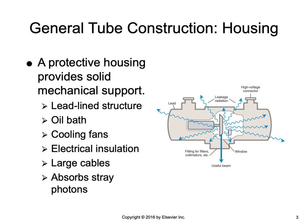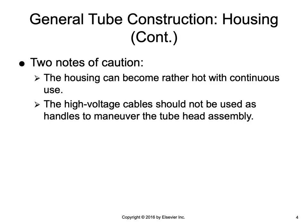The protective housing with the x-ray tube situated inside serves as an electrical insulator and a thermal cushion for the x-ray tube, in addition to being a protective device against physical damage. There are two notes of caution about the x-ray tube housing. Because it is on for a very extended amount of time, the housing can become very hot. This is most likely to occur with fluoroscopic units, and most permanently installed units have the tube located under the tabletop to limit the possibility of contact and prevent the RT or even the patient from getting burned.